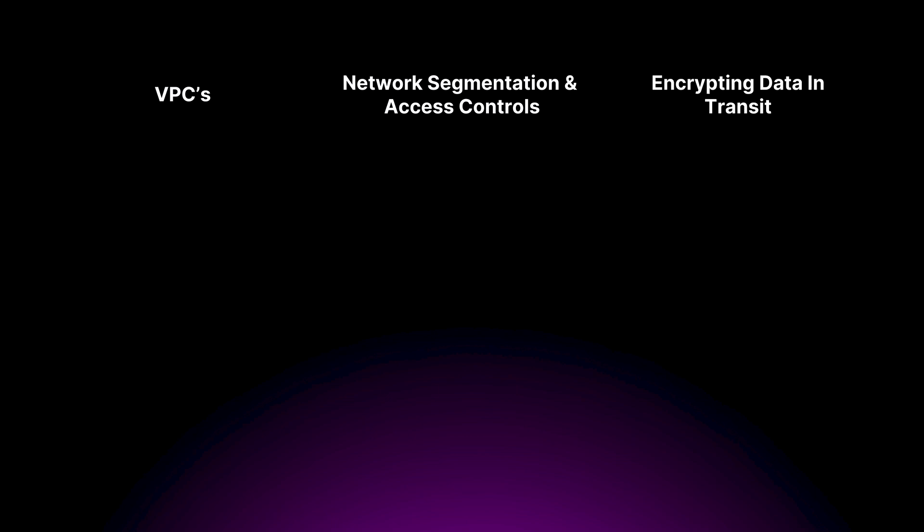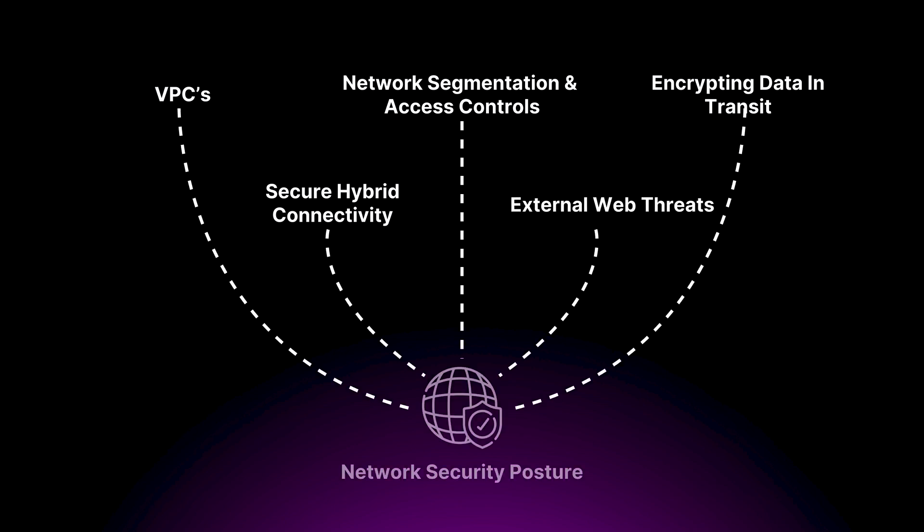Securing your network architecture requires a multi-layered approach, much like securing a city. By using VPCs, implementing network segmentation and access controls, encrypting data in transit, ensuring secure hybrid connectivity, and protecting against external web threats, you can build a robust and resilient network security posture. Remember, your network is the backbone of your cloud environment — investing time and effort into securing it properly will provide a solid foundation for your applications and your data.